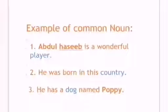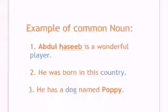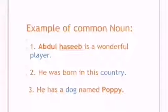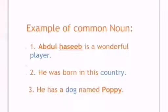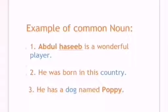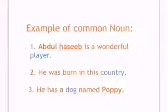Let's look at the blue words. Abdul Haseeb is a wonderful player. He was born in this country. He has a dog named Popi. Here, player, country and dog are examples of common noun and we write them with small letters.